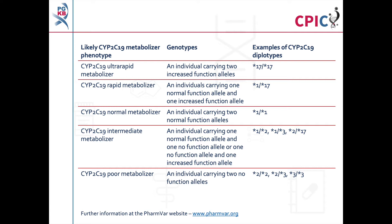Note that as more evidence becomes available, new star alleles can be added and the functional definition of some star alleles may change. An important caveat for all genotyping tests is that any alleles not detected in the assay are designated as star 1. This can include rare increased function, reduced function, and non-functional alleles not routinely screened for in some genotyping tests. Further information about CYP2C19 alleles can be found at the PharmVar website at www.pharmvar.org. A link to PharmVar is also given in the description below this video.